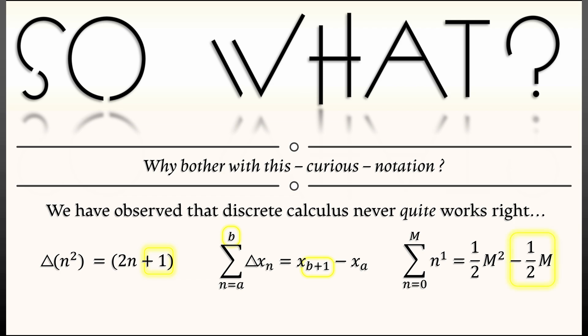We get so close. It is, in fact, 1 half m squared minus 1 half m. It's just a little bit off. Discrete calculus almost works the way that continuous calculus does. How do you fix that? Falling powers is how you fix that.